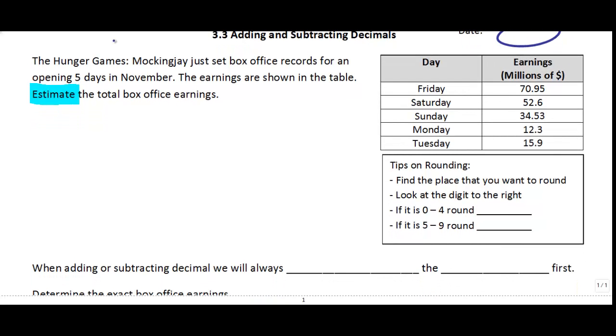The first thing I want to make you aware of is when we estimate, we're going to do something called rounding off. We've got some tips over here on how to round numbers off. Basically, what you want to do is find the place that you want to round to and look at the digit to the right of that. If you see a zero or a four, anywhere from zero to four, you're going to round that down. And if it's anywhere from five to nine, you want to round it up. This will make more sense when you do an example.